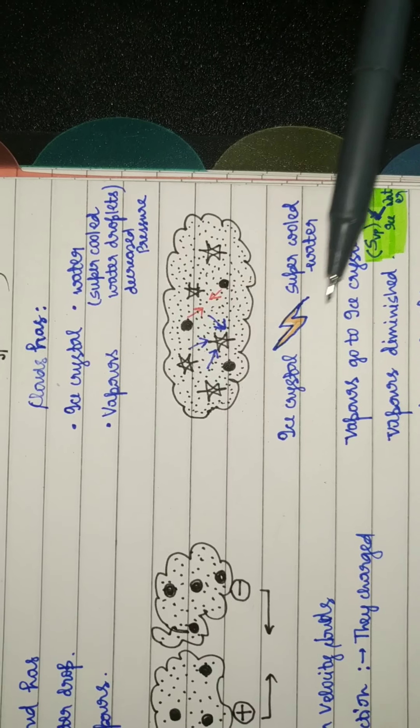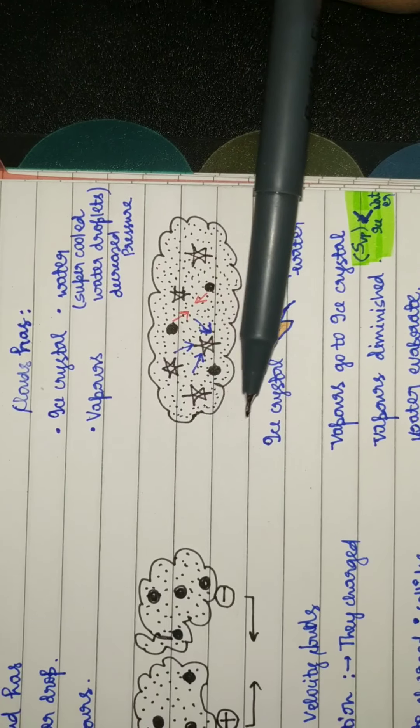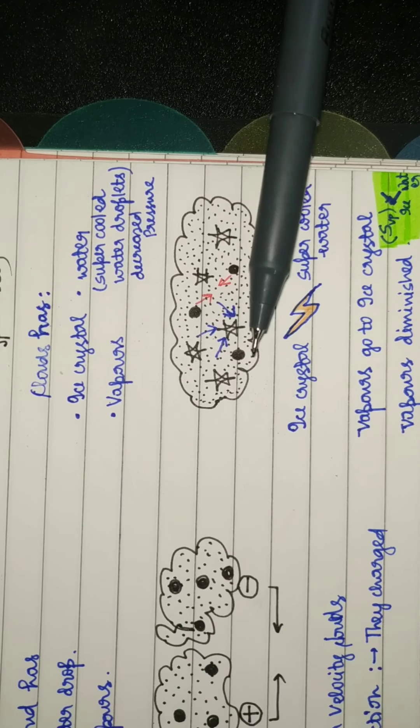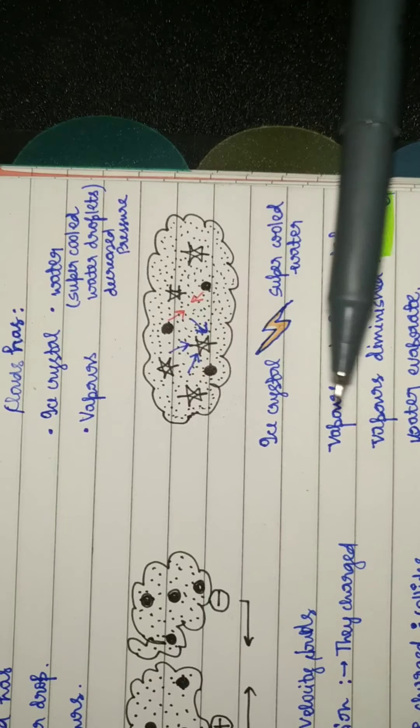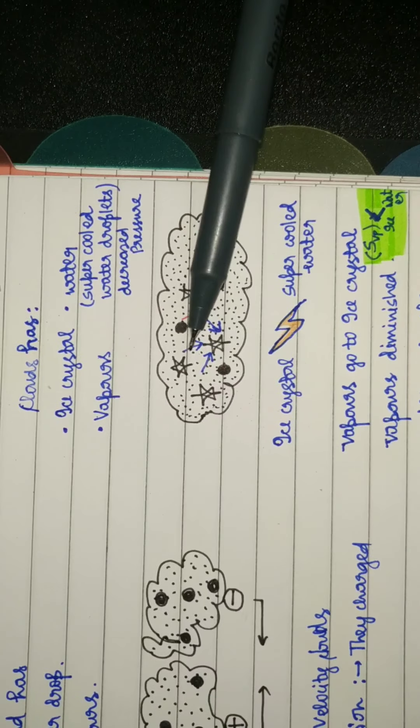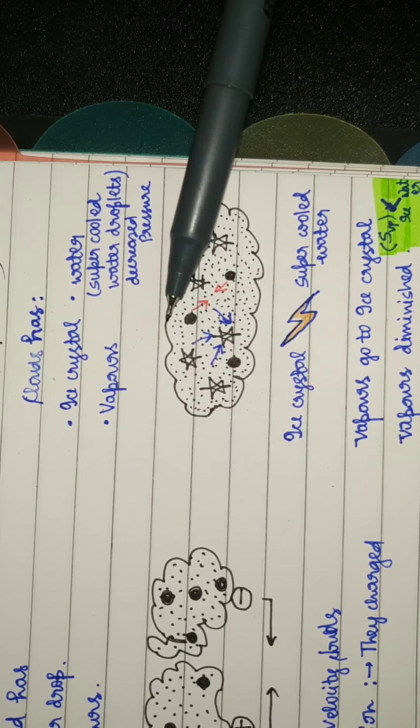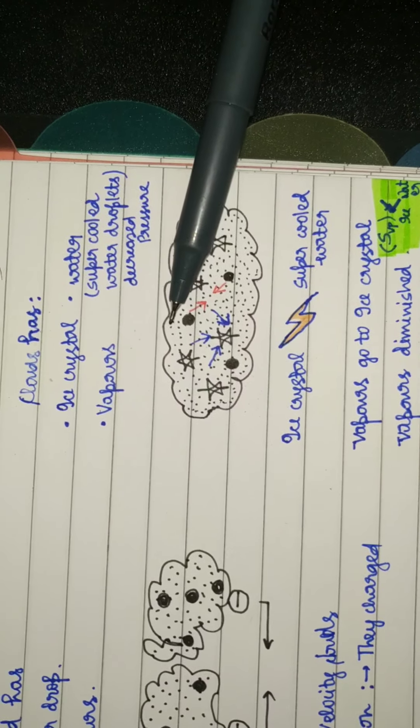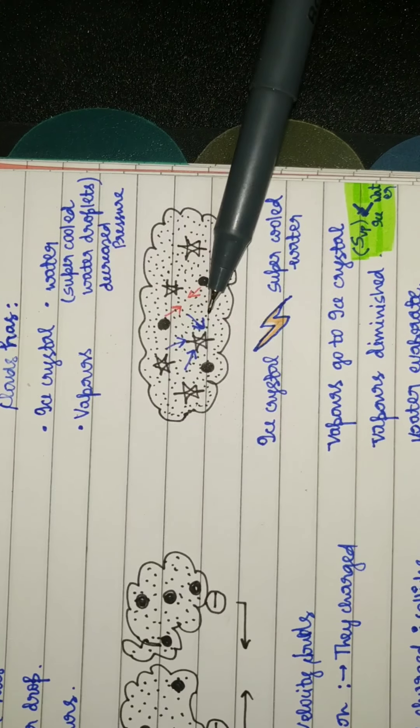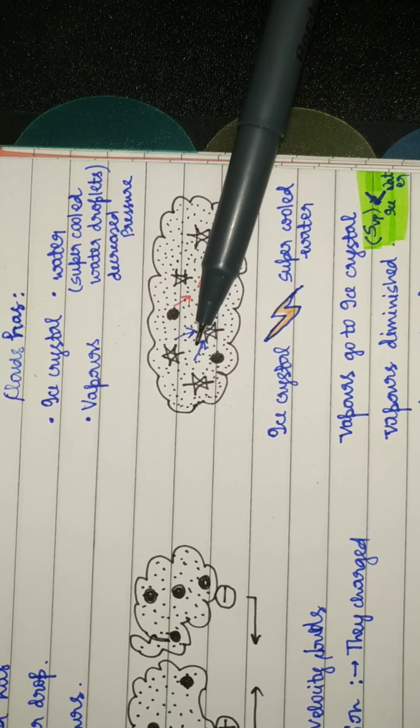Now the theory says that the ice crystals and the super-cooled water droplets undergo a competition to grab as much water vapor so as to fall on the ground. But theory says that ice crystals start taking the lead because, as I have already explained, the vapor pressure over the ice crystal is lesser compared to that of water droplet.